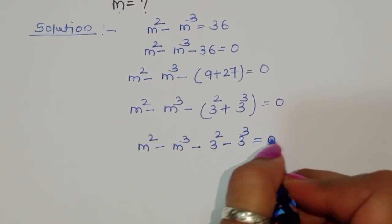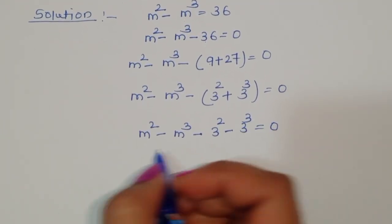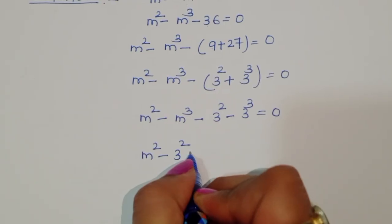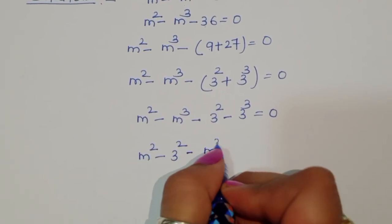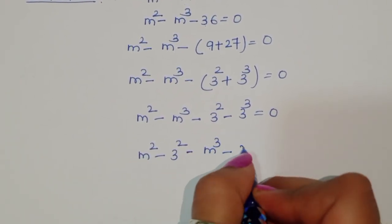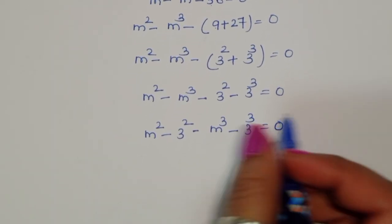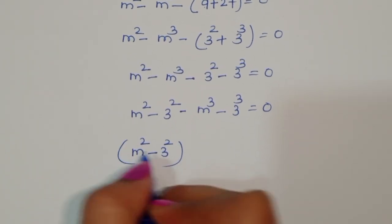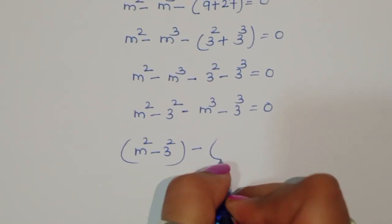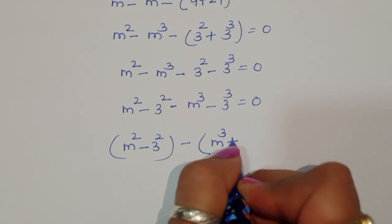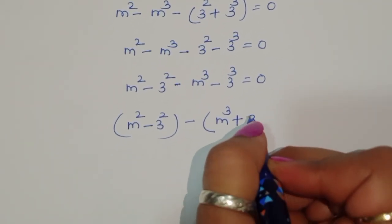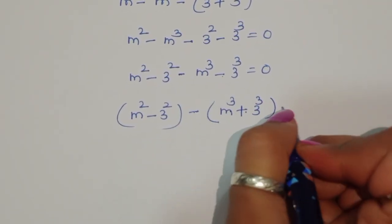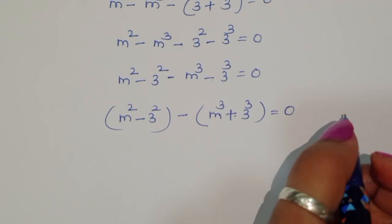We can write this as m squared minus 3 squared, and here minus m cubed minus 3 cubed equals 0. Then we rearrange: m squared minus 3 squared, minus m cubed plus 3 cubed equals 0.